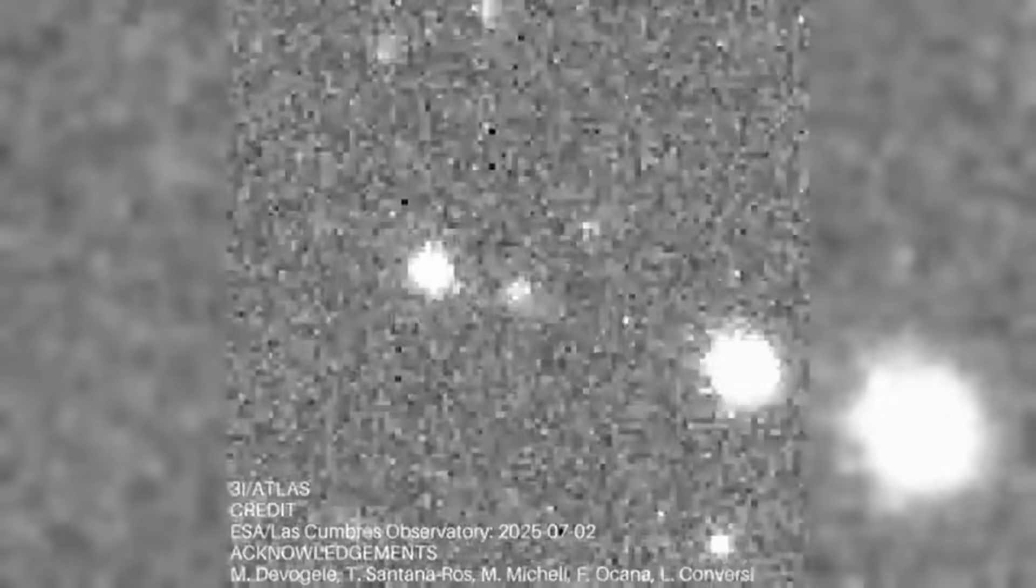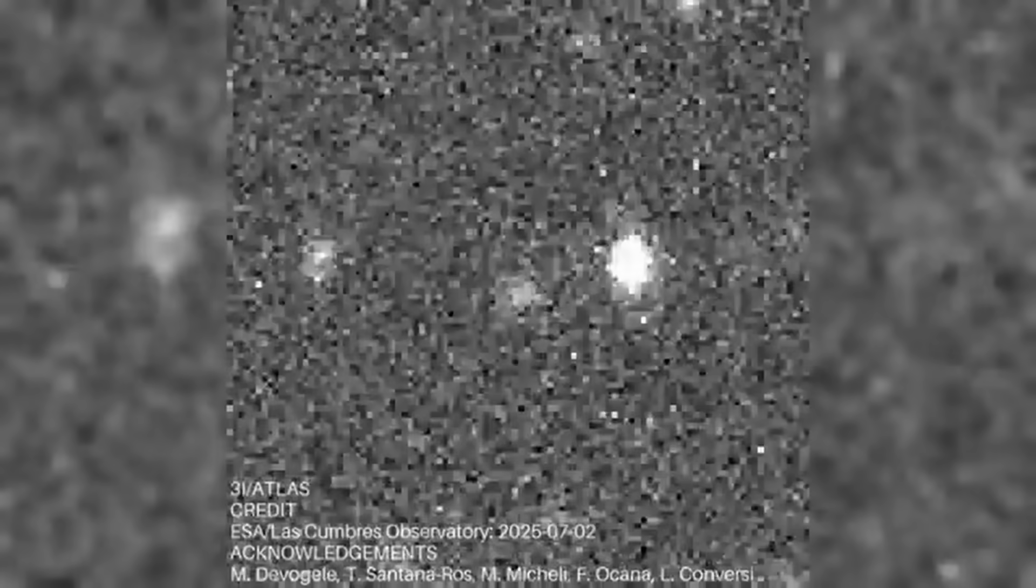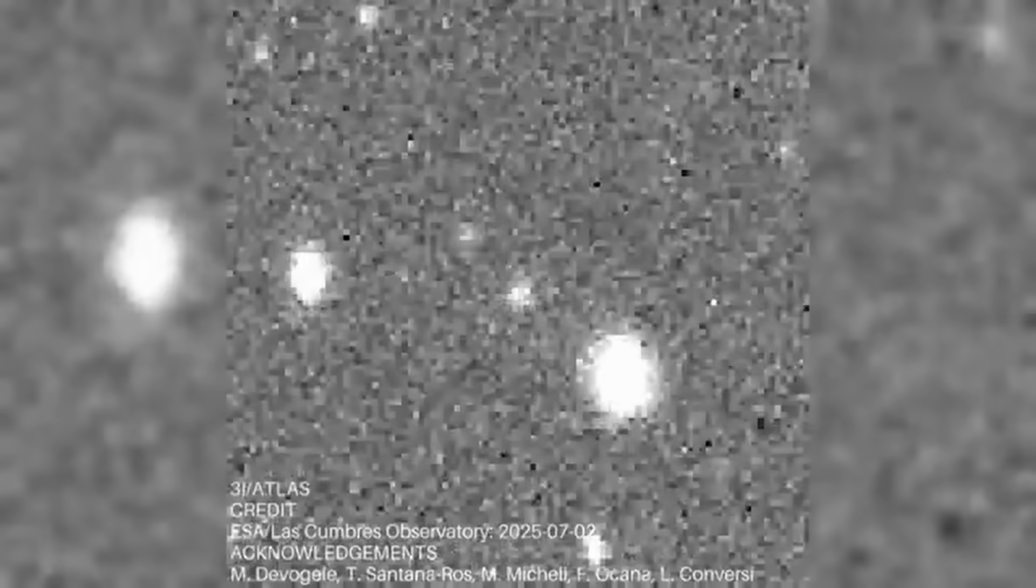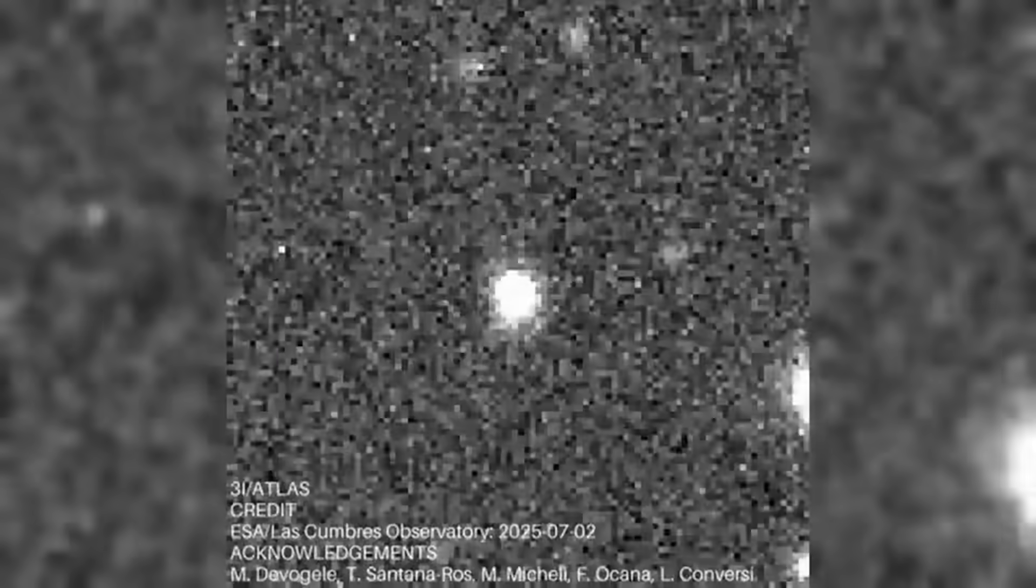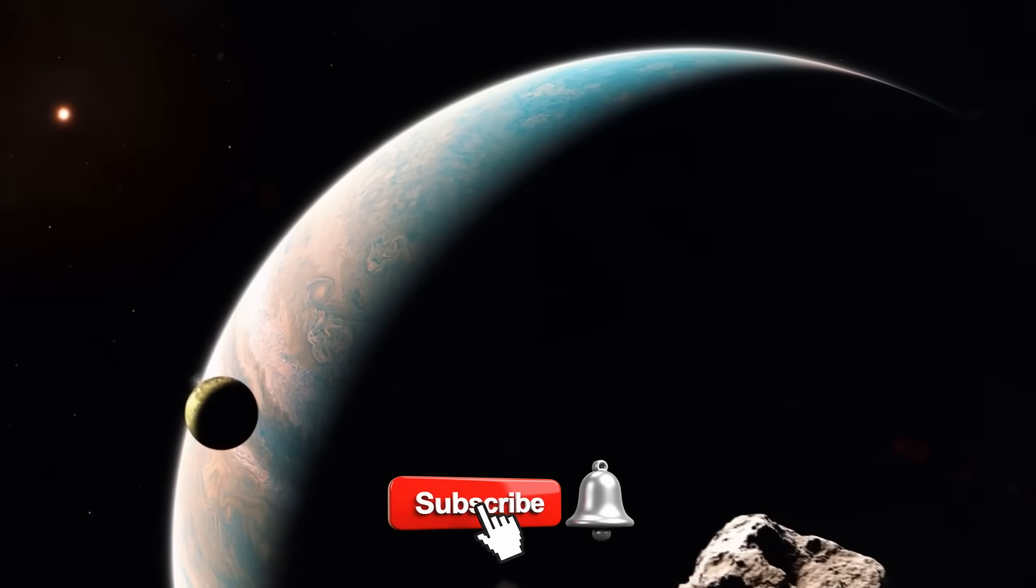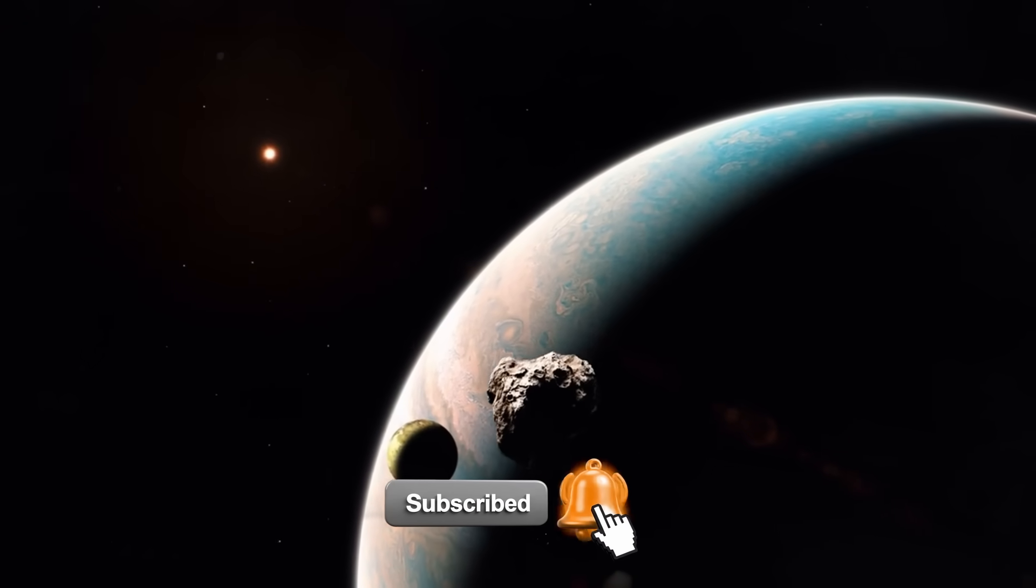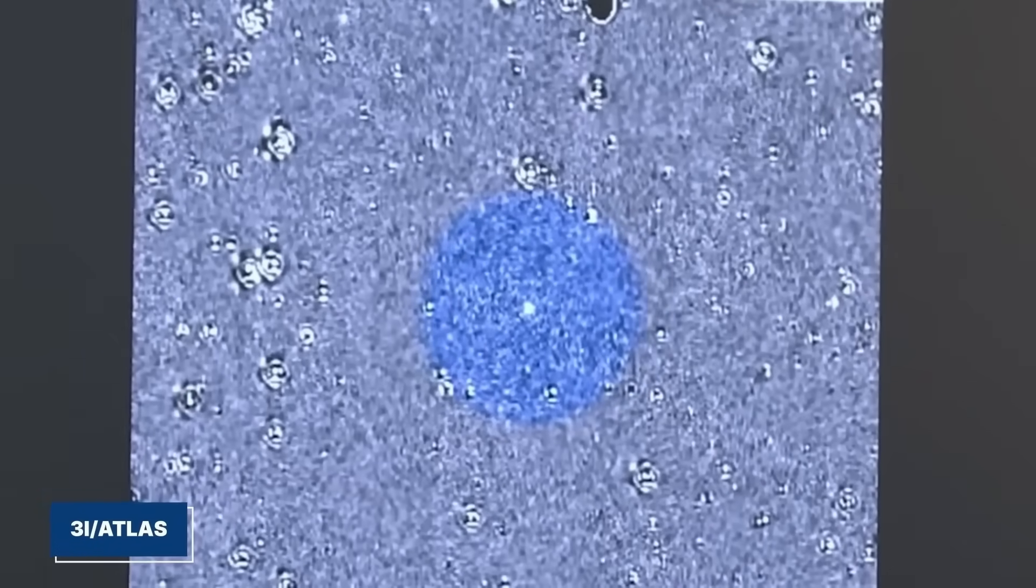230 observatories worldwide tracked the course correction. It happened right after perihelion, exactly when and where it needed to guide the object toward this boundary. If you've been following 3i Atlas, hit subscribe right now, drop a like, and let's break down the math, the maneuver, and the three scenarios scientists are watching for when Atlas reaches Jupiter's edge, because what happens next could rewrite everything we think we know about interstellar visitors.